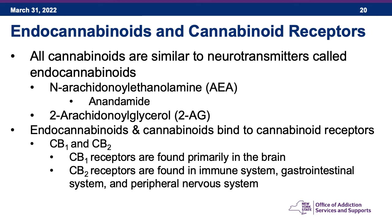Switching gears now: all cannabinoids in the plant are similar to neurotransmitters called endocannabinoids. There are two main ones: N-arachidonoyl ethanolamine, or AEA, also known as anandamide (the Sanskrit word for bliss), and 2-arachidonoyl glycerol, or 2-AG. These are naturally occurring neurochemicals in our brains. These endocannabinoids and the plant cannabinoids both bind to cannabinoid receptors in the brain and body.